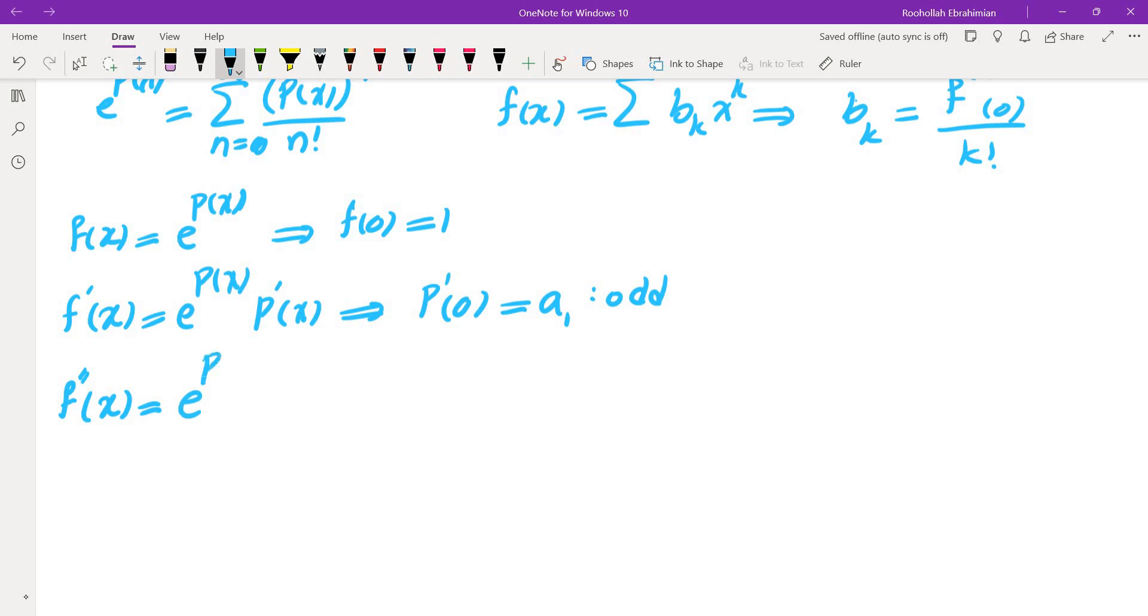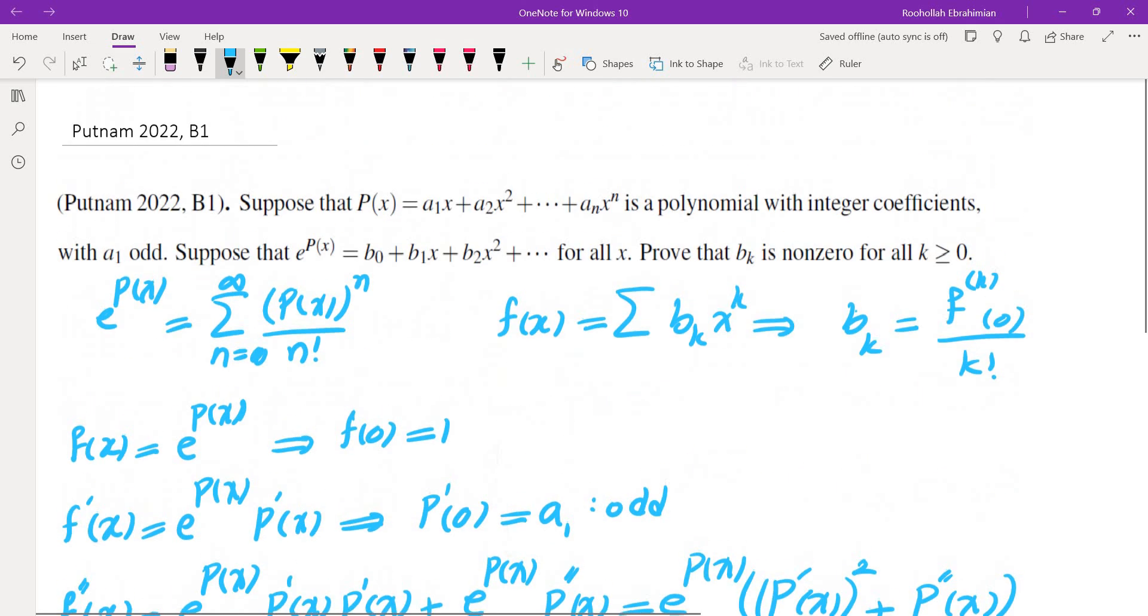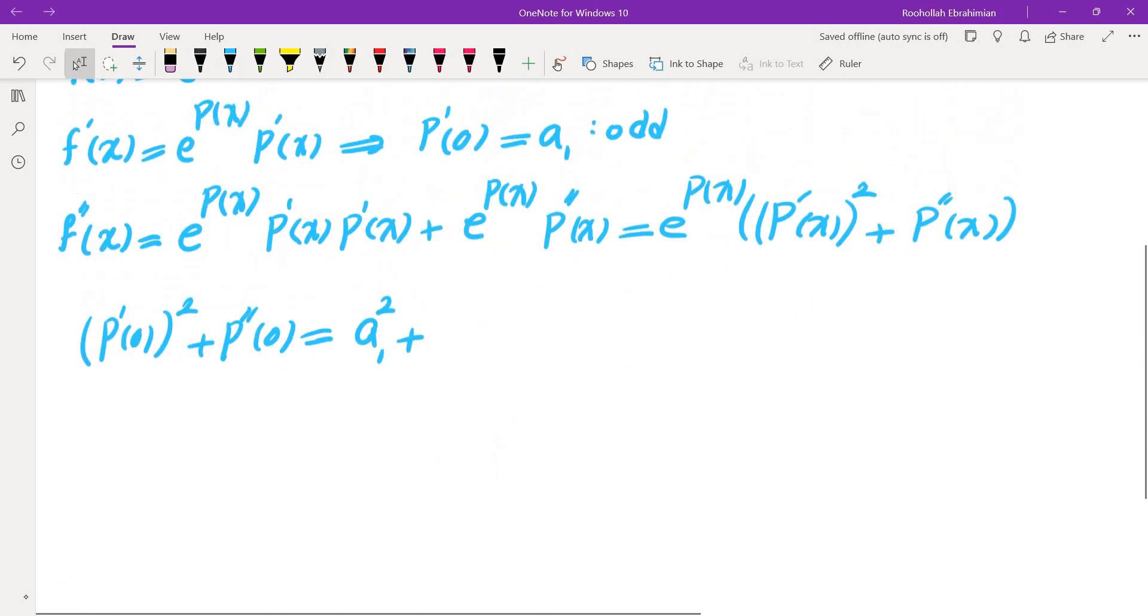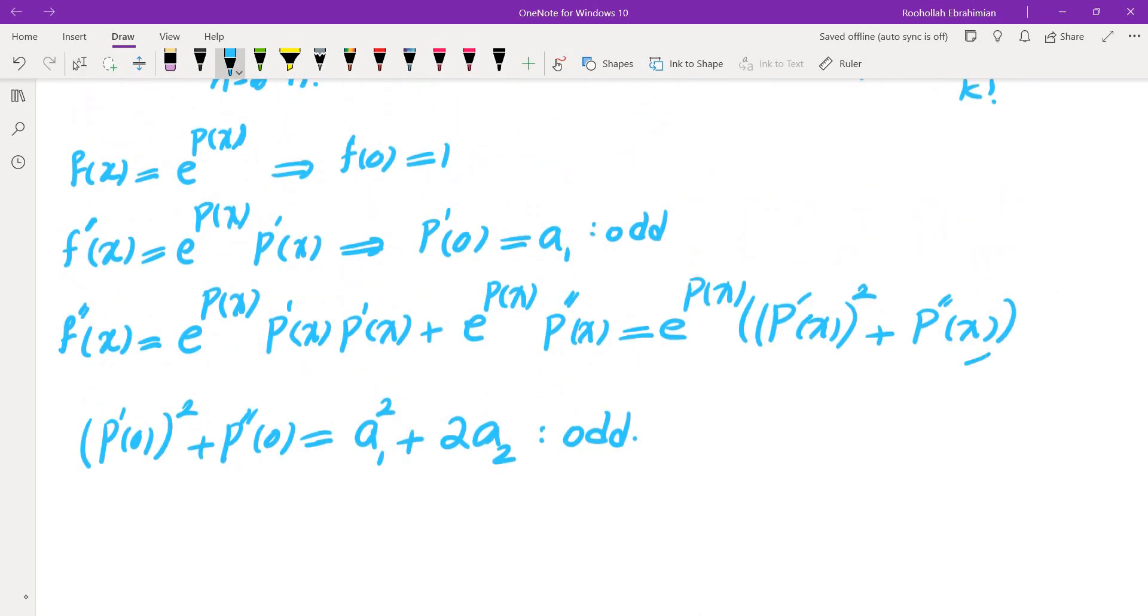f''(x), you'll have to use the product rule and chain rule: e^(P(x)) times (P'(x)² + P''(x)). Now plug in zero. P'(0) is a₁ so that's a₁². P''(0), if you take the second derivative you get the coefficient of x² doubled, so that's 2a₂, and this is also odd. So perhaps we can always show that f^(n)(0) is odd, and in order to do that we need to work inductively because finding a formula for f^(n) isn't easy.